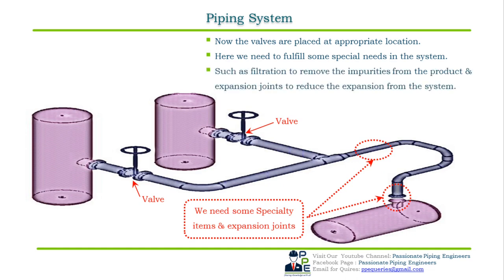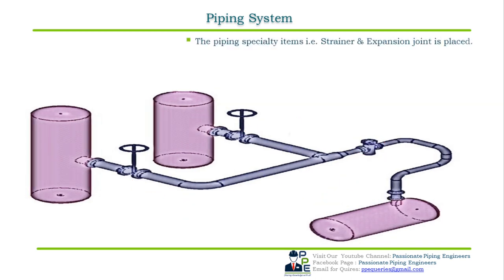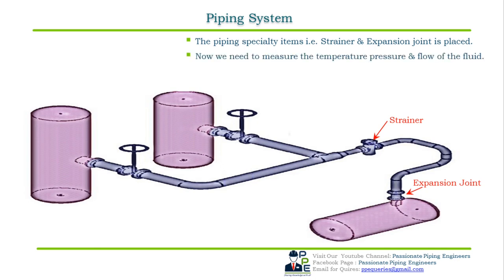The fluid flowing through the pipes can be hot or cold depending on the requirements. We know that metal expands when heated and contracts when heat is removed, so here comes the point of thermal expansion. To absorb or reduce this thermal expansion, we need some expansion joints in our system. The strainer and expansion joint are placed at appropriate locations. We also need to measure the temperature and pressure under which the fluid is flowing.